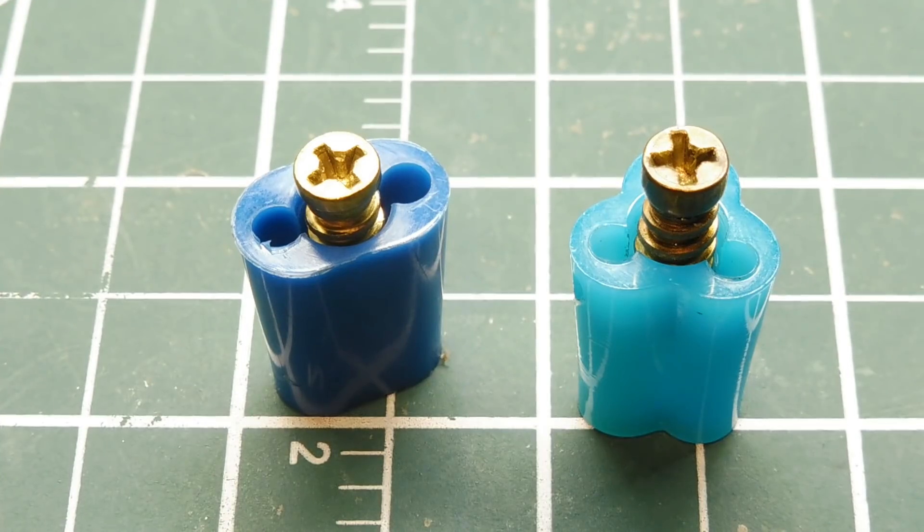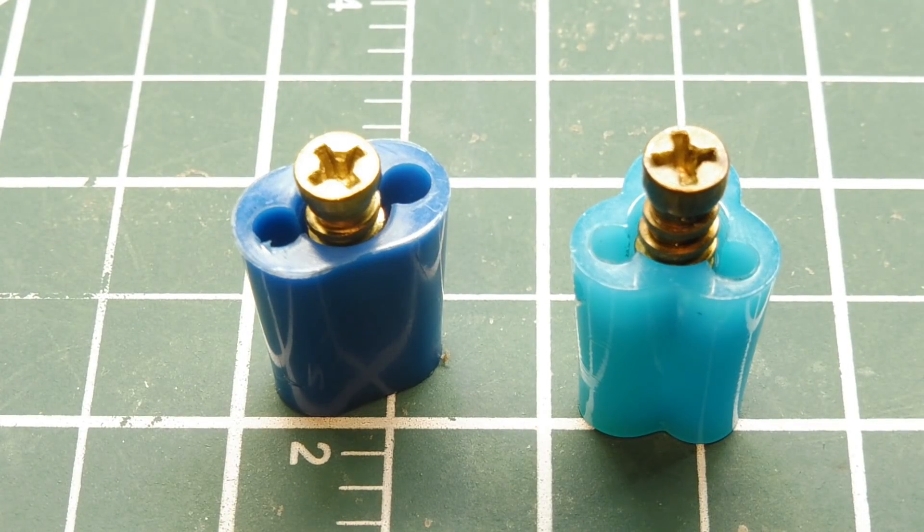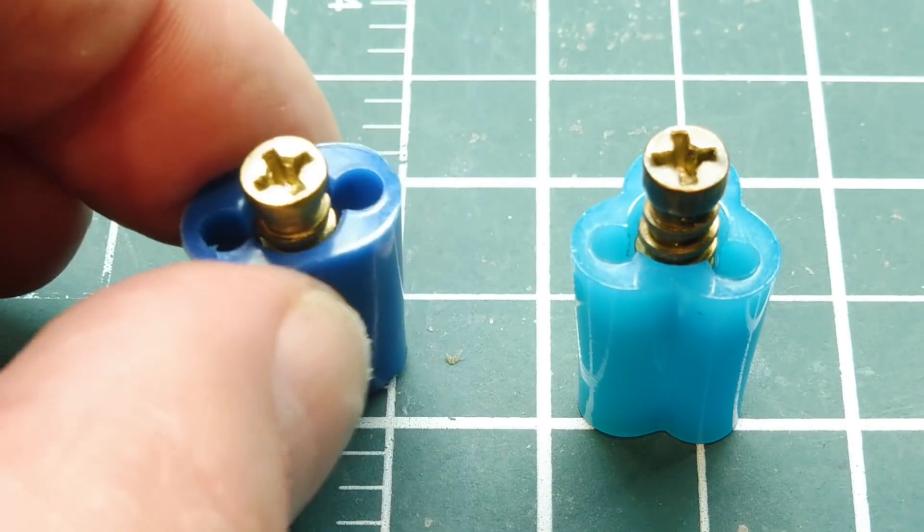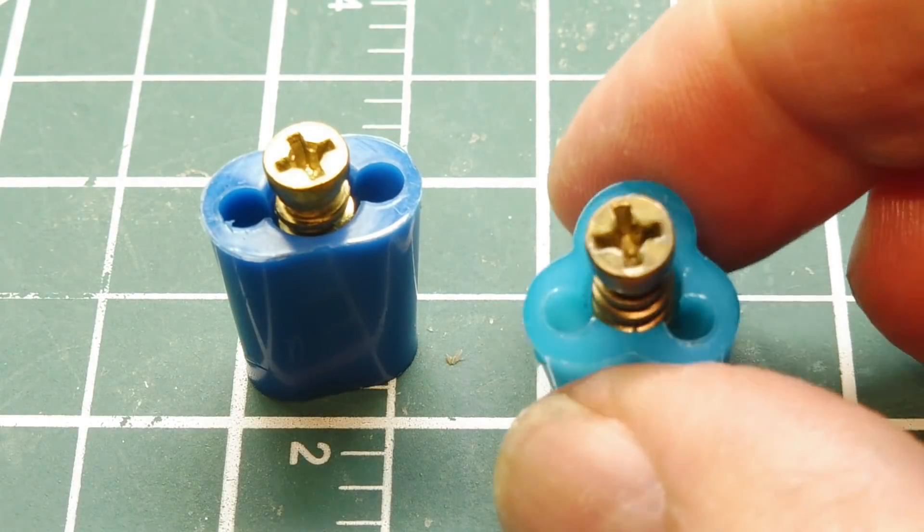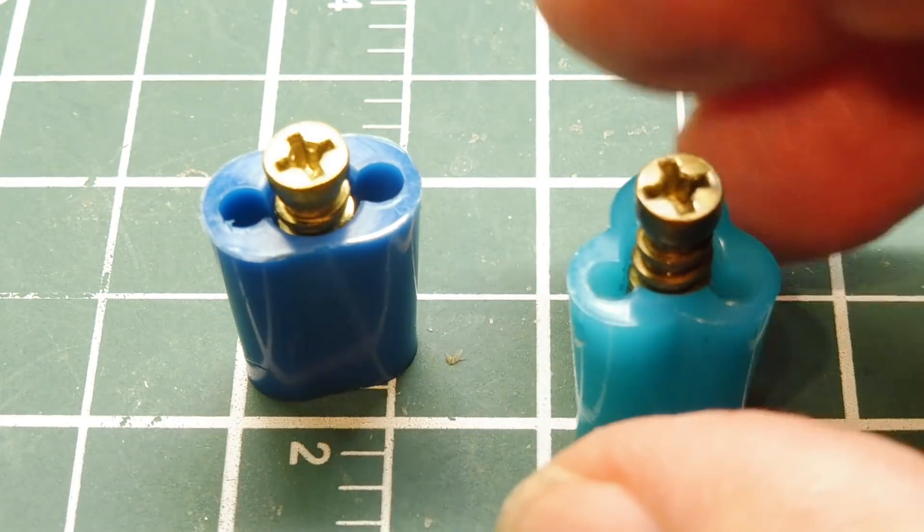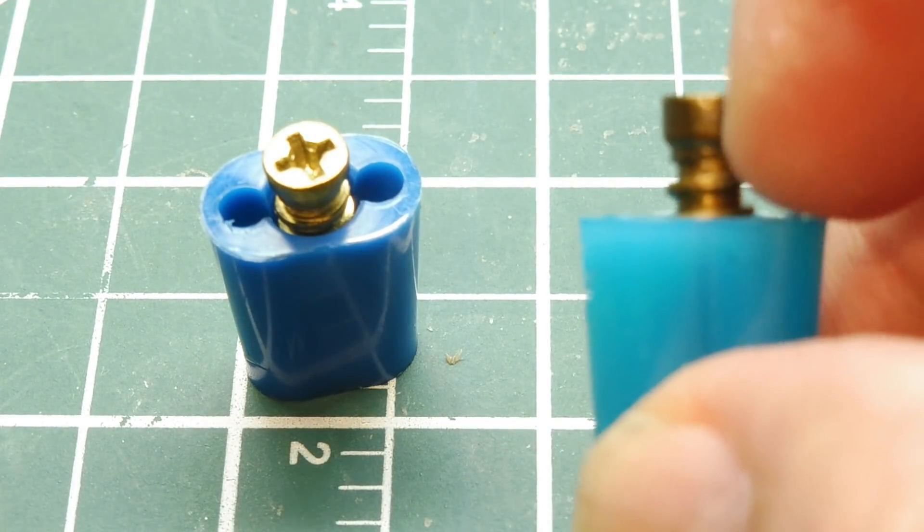Next we're going to look at pigtailing two wires together. This connector here will connect two wires in the pigtail style. This one can connect two or three wires. You notice you put the wires in, you don't have to strip them. You just put the wires in, into the connector, and screw the screw down.